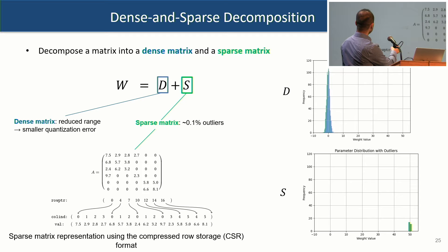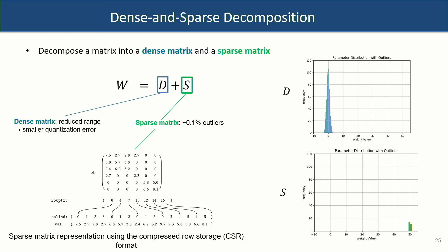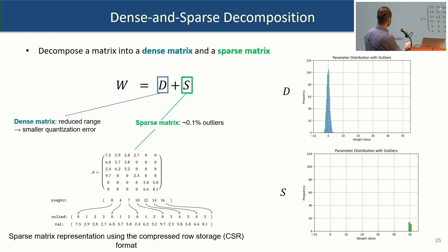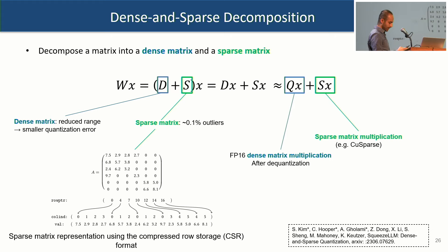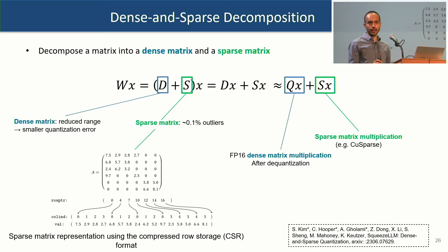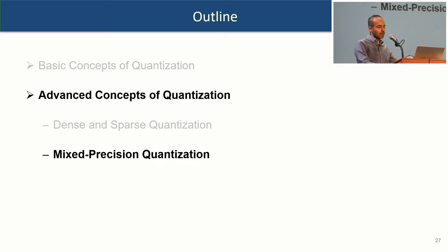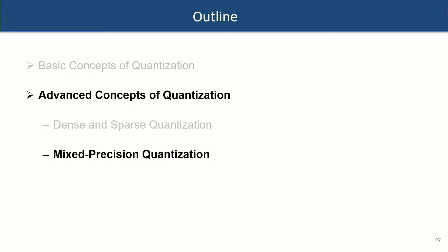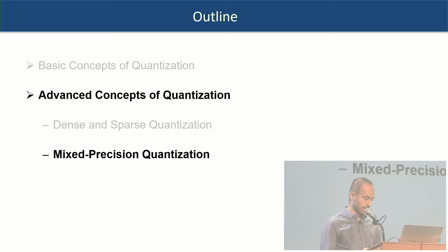In this decomposition, you have a sparse matrix — mostly zeros except for the outlier values — and a dense matrix. You store the sparse matrix efficiently using formats like compressed sparse row, only storing non-zero values. When multiplying with an input x, the dense and sparse parts can be computed in parallel. For example, new TPU architectures have a separate sparse core that executes in parallel with the dense core. GPUs also support efficient sparse execution.